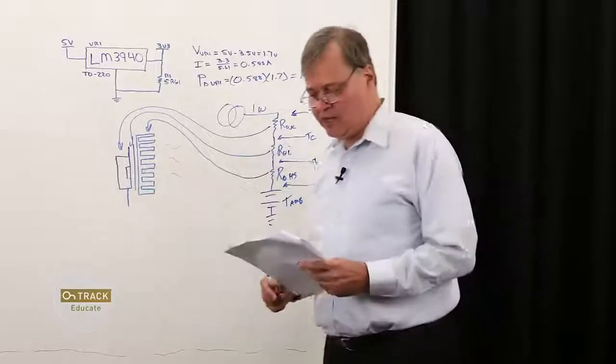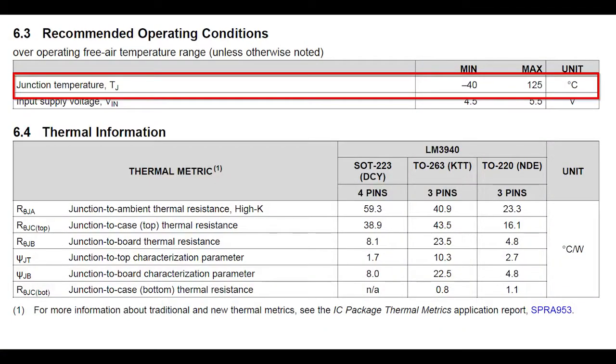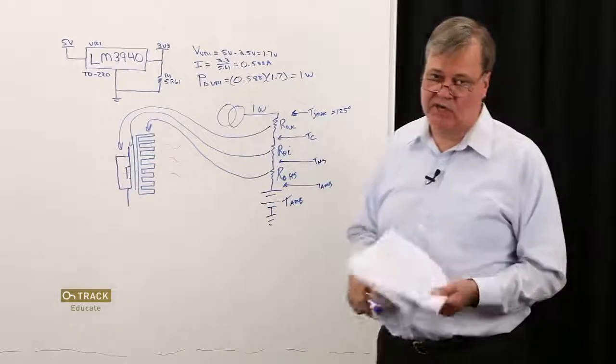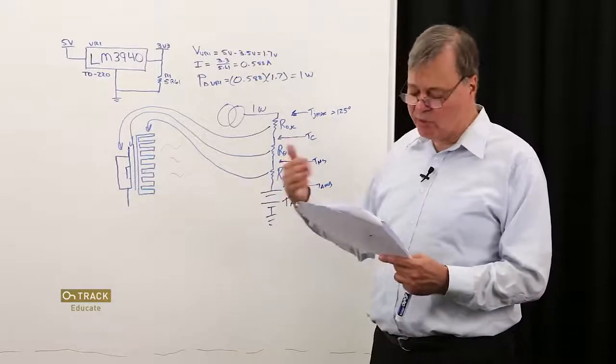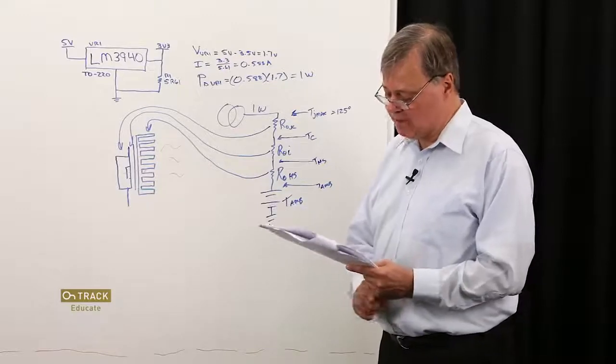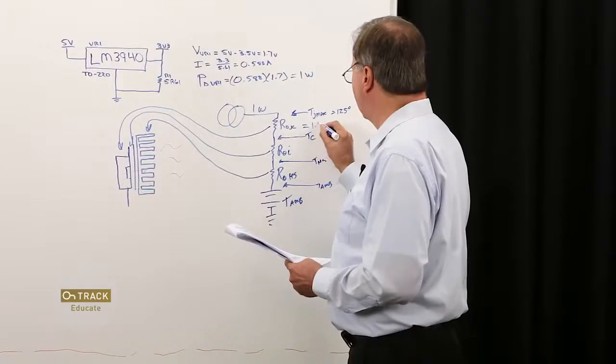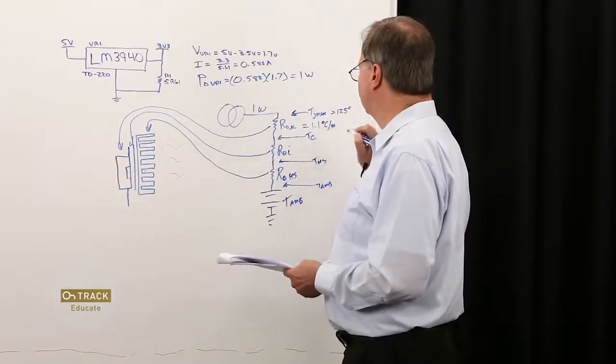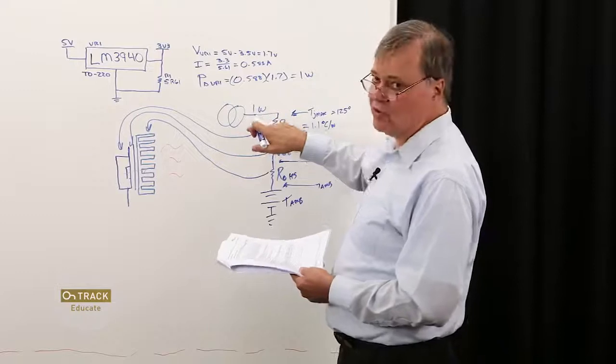I've got a data sheet here for the LM3940, and there are a couple of very useful numbers here. The first one is under the recommended operating conditions. We have our junction temperature max. So, TJ max is equal to 125 degrees C. This is the maximum operating temperature we can run our junction at without failing the device. Then, we have a thermal impedance, or actually a thermal resistance value for this TO220 package. It's listed as R theta junction to case of 1.1, and these thermal resistances are always in units of degrees C per watt. It's because we have a temperature drop across the thermal resistance, and that is due to heat flow through the device.